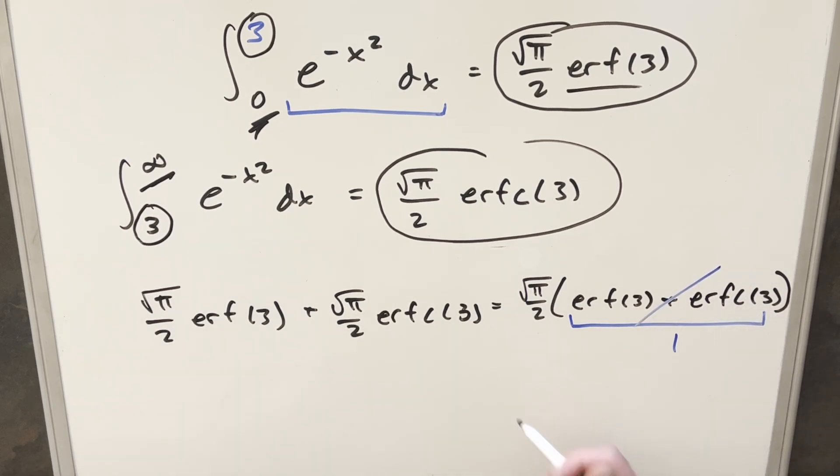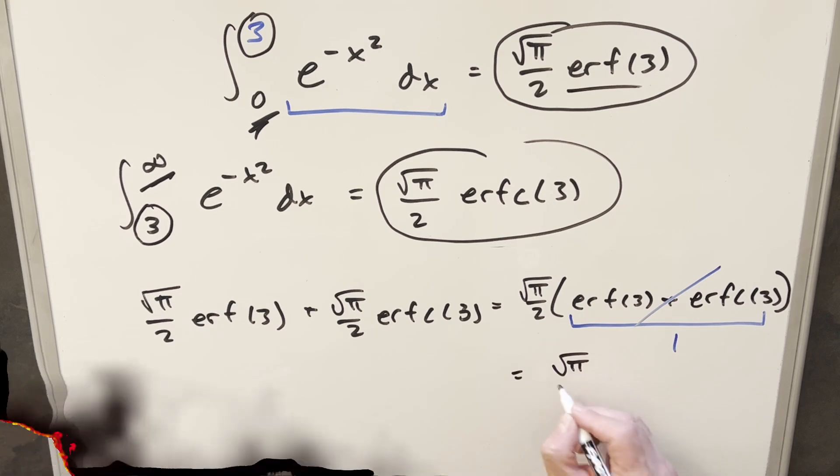So this part goes away, and we end up with the same solution that we had when we added before. This is just square root of pi over 2.